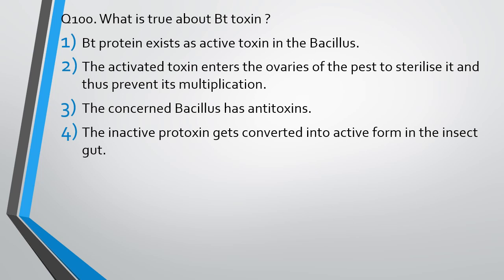Question number 100. What is true about Bt toxin? Bt protein exists as active toxin in bacillus. The activated toxin enters the ovaries of the pest to sterilize it and thus prevent its multiplication. The concerned bacillus has antitoxins. The inactive protoxin gets converted to active form in insect gut. The correct answer is option 4. The inactive protoxin gets converted to active form in the insect gut.